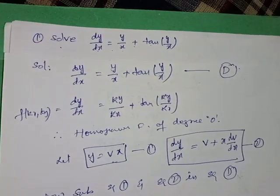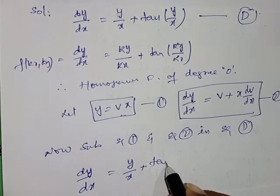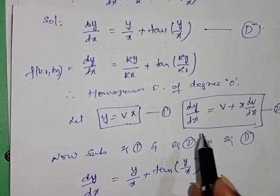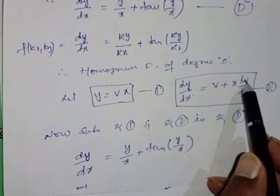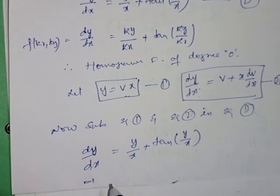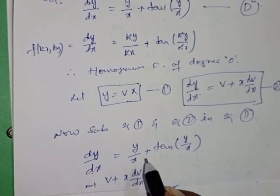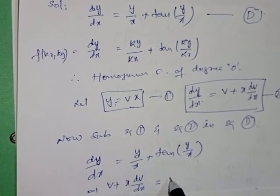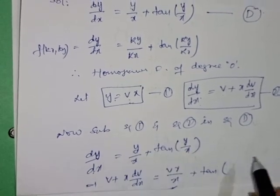Substituting into the original equation: dy/dx = y/x + tan(y/x). From equation two, dy/dx = v + x·dv/dx. From equation one, y = vx, so y/x = vx/x.